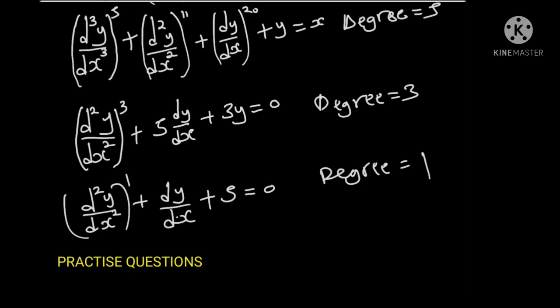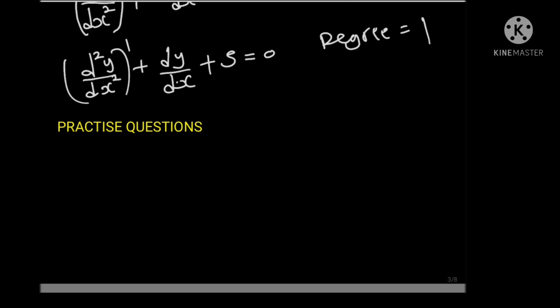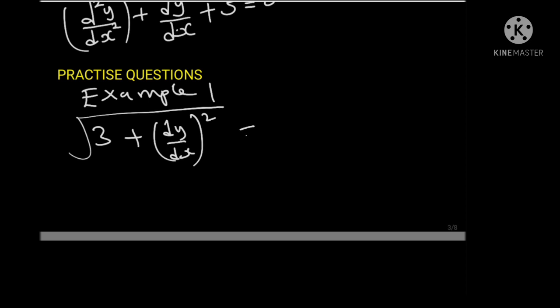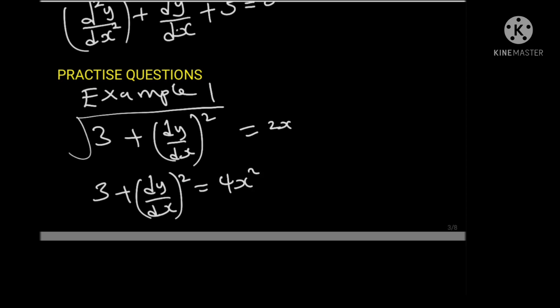Let us do more examples on order and degree. Example 1: suppose we have the square root of (3 plus (dy over dx) squared) equals to 2x. To get the order and degree, we first need to remove the radical sign by squaring both sides, giving us 3 plus (dy over dx) squared equals to 4x squared. We only have one differential coefficient, dy over dx. Therefore, the order is 1 and the degree is 2 — since the power of dy over dx is 2.